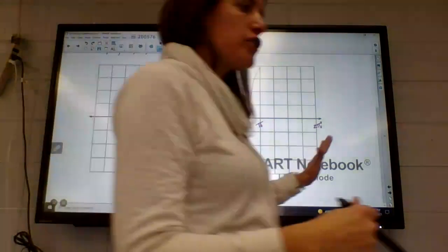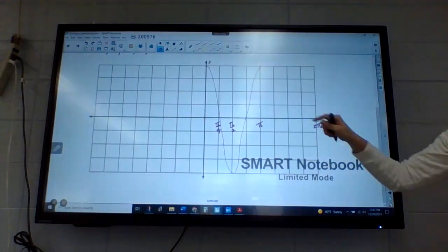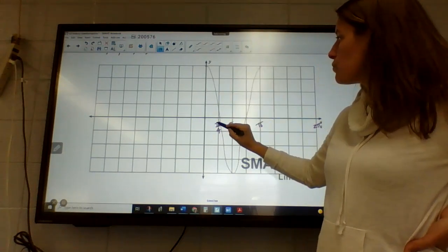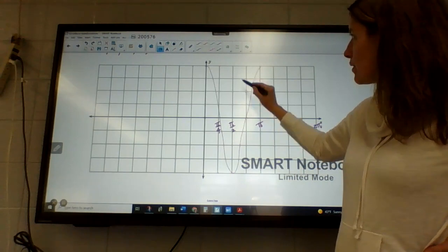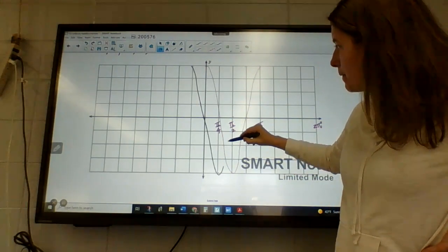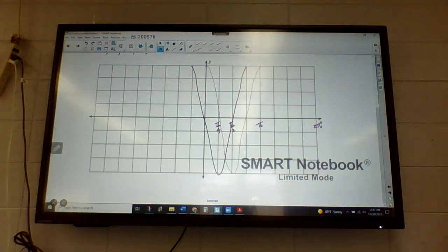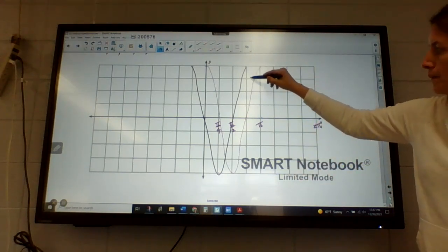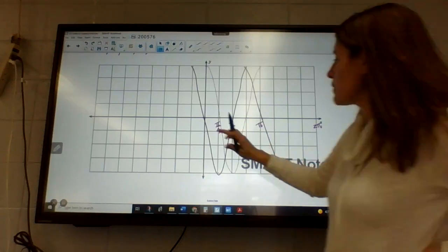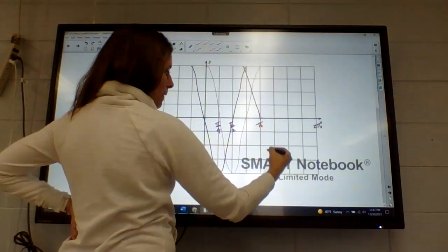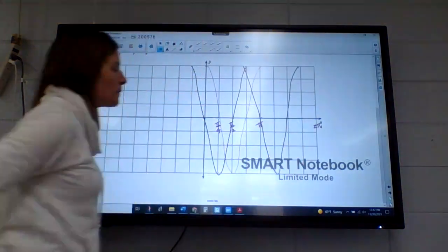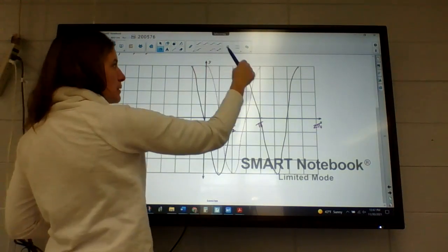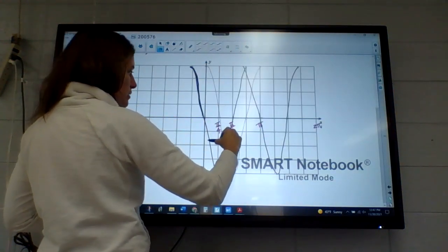And then since we did pi over 4, we're going to shift it to the left, pi over 4. So just one space over. So that's my new one. So this dark purple here is supposed to be my new line here.